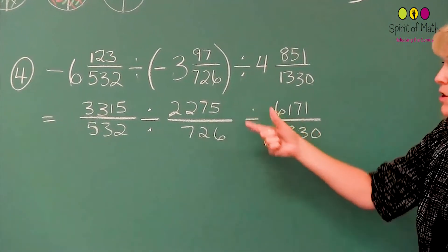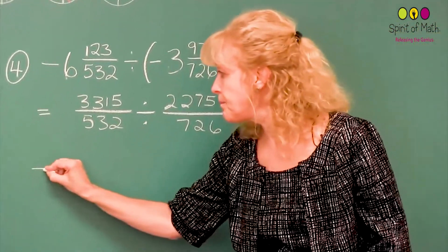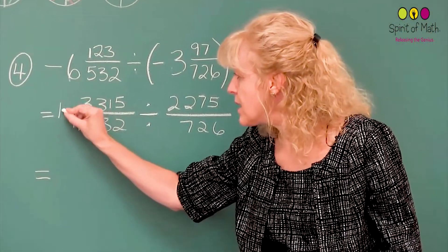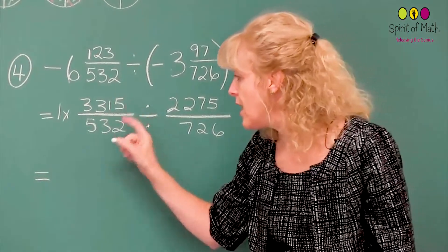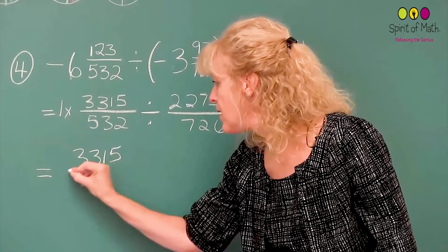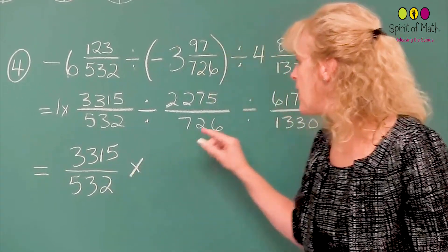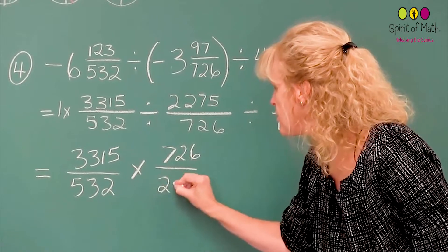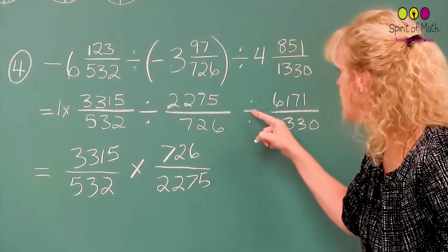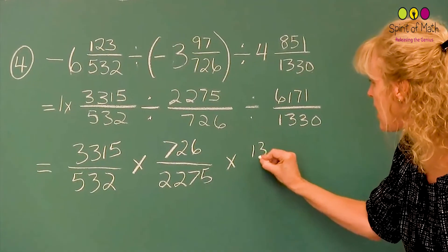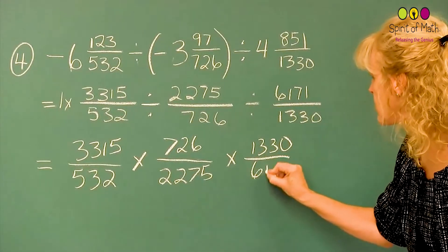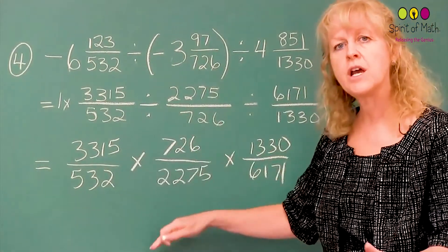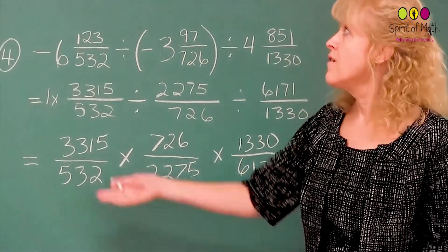Now, you can do something with this because now you can flip these numbers. So the next step before you can multiply, because you need to be able to multiply these out, is you keep this the same because this is the same as saying 1 times this. So this has a multiplication in front of it. That stays the same, 3,315 divided by 532. Then you multiply by, when you change this to multiplication, you have to change this at the same time. So it's 726 over 2,275. And then the next one, you're changing that to a multiplication, which means this has to change. And you've got the reciprocal here, 6,171. Now, you've got a multiplication of rationals question. You prime factor, you cancel out, and you get your final answer. And that's it for division of rationals.